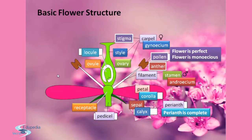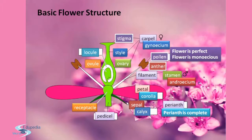The peduncle is the stalk of the flower. The receptacle is the swollen part where all the parts of the flower are attached — petals, sepals, filament, and ovary are all attached here. The sepal is the outer part of the flower, often green and leaf-like, that encloses a developing bud. The petal is the colored part, and many petals they make up the corolla — conspicuously colored parts are called petals.